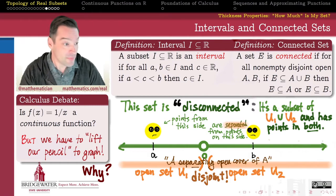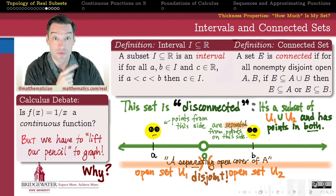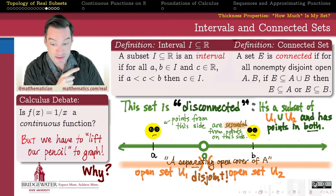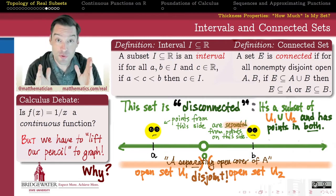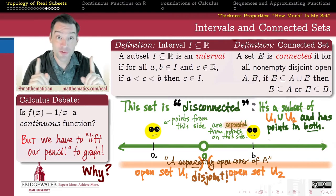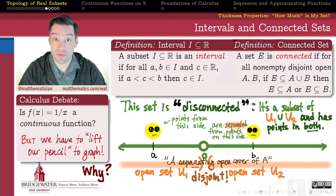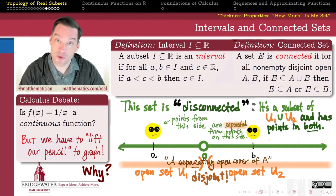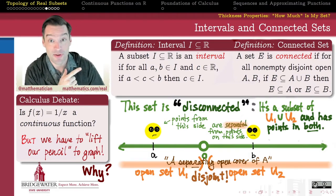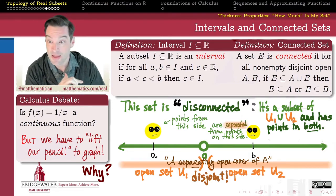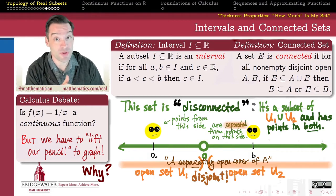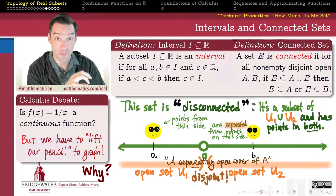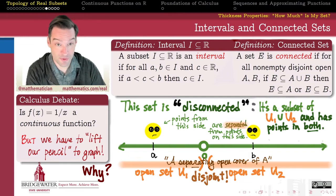An interval, as a subset of the real numbers, is a set where any time I contain two real numbers A and B, I must also contain every single real number in between A and B — so I don't have any gaps. And the more general topological notion of connectedness is that if my set can be contained in a union of two non-empty disjoint open sets, then it must be contained entirely within one of those non-empty disjoint open sets.